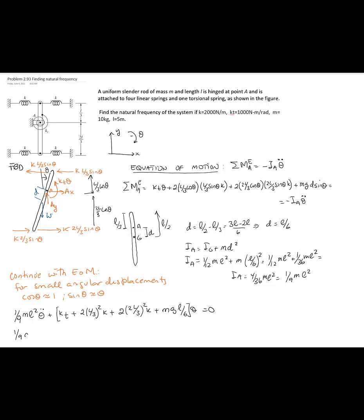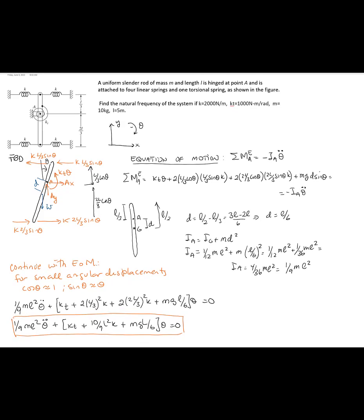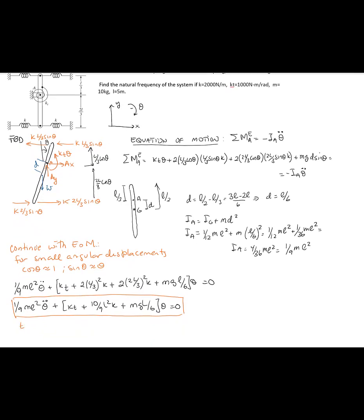We can simplify the spring terms to (10/9)L² times k, plus the weight term MgL/6. This is our equation of motion, which provides the equivalent spring constant and equivalent mass, allowing us to calculate the natural frequency as the square root of the equivalent spring constant divided by the equivalent mass constant.